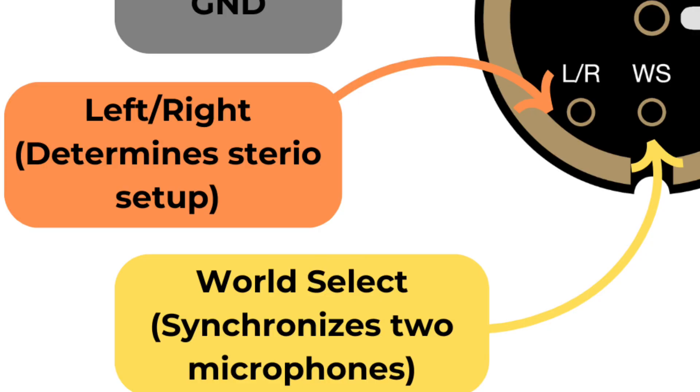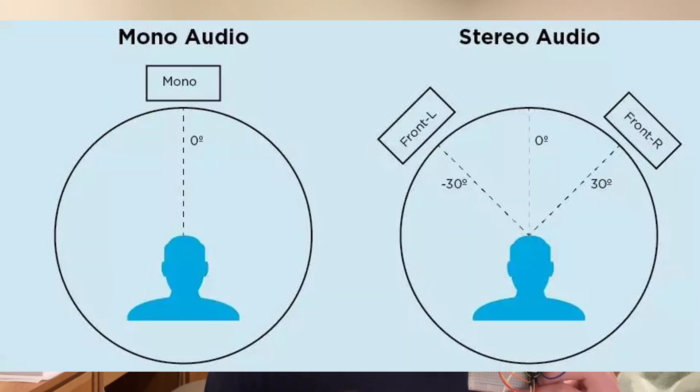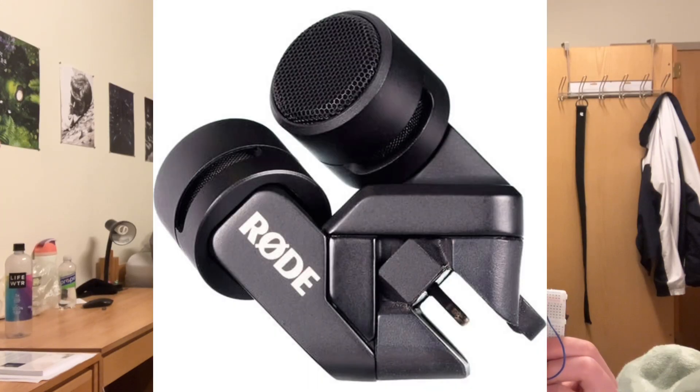Then we have two other pins: the WS pin, which is the Word Select, and the LR, which is left-right. The purpose of the left-right pin is for when you're using two microphones — for example, some microphones can pick up stereo, which means they can get spatial audio recognition. In that system you would need two microphones, and that's why you need to designate one as left or right. In this example, I am only using one microphone, so I just selected left.